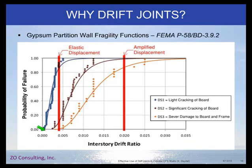So what does this mean? FEMA has a document, P-58, and a sub-document BD-3.9.2, which talks about gypsum partition walls — developed primarily for interiors. I couldn't find anything specifically for exterior stucco walls, so I used the gypsum wall fragility function curve as a proxy, because if anything, I think stucco is going to perform worse than gypsum.